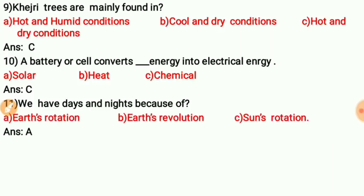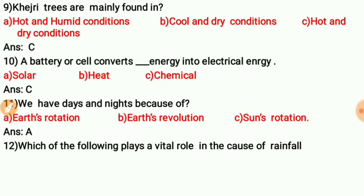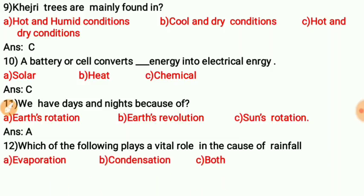Question eleven: Which of the following plays a vital role in the cause of rainfall? The correct answer is C — both evaporation and condensation. Both evaporation and condensation are the main causes of rainfall.